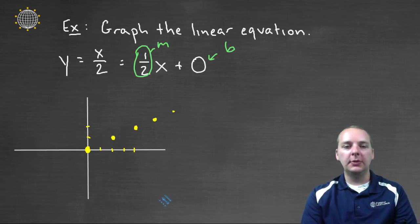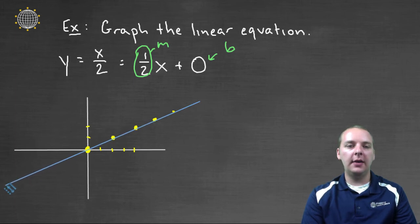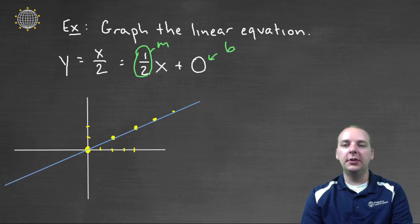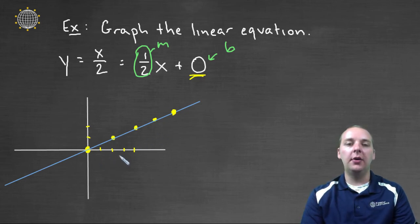So just to wrap this one up, we'll connect these dots. Maybe something kind of like that. Notice this is kind of an interesting one, because the line actually goes through the origin. Which we kind of knew that, because the y-intercept was zero. But nevertheless, this would be the equation of that particular line, right there.